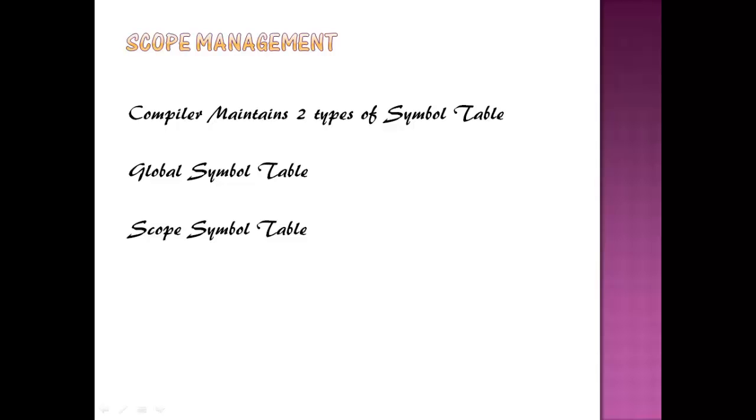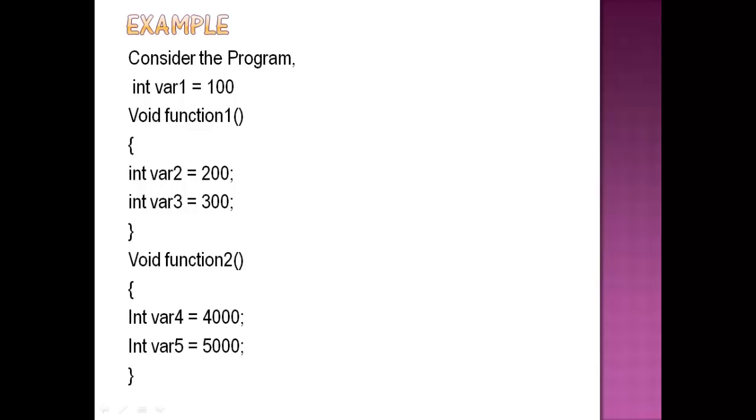Scope Symbol Table is the child table. So here to determine the scope of name, Symbol Tables are arranged in hierarchical structure. Consider the example. Here, the simple program is represented in hierarchical format.